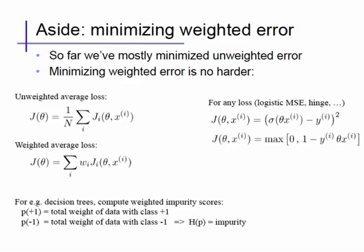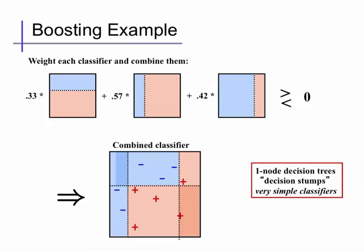For algorithms that are not direct minimizations, like decision trees, we can simply modify the techniques we had before to now take weights. For instance, in a decision tree we might use a weighted impurity score where we still calculate the entropy, but instead of calculating the entropy of the unweighted fraction of data in one class or another, we define the probability of class +1 to be the total weight of data in class +1, and class -1 to have the total weight of data in class -1. That still defines a probability distribution over classes as long as the weights sum to 1, and we can define an impurity score H(p) to score information gain.